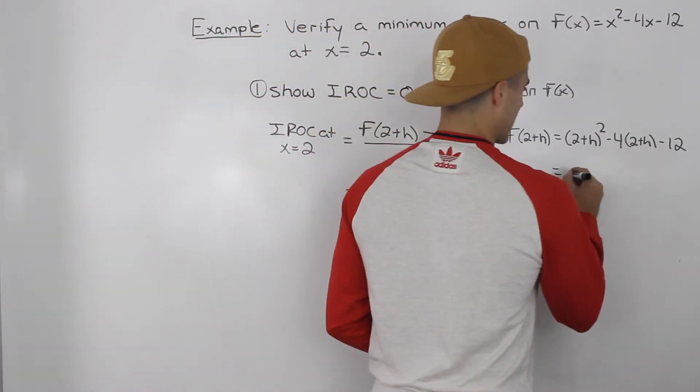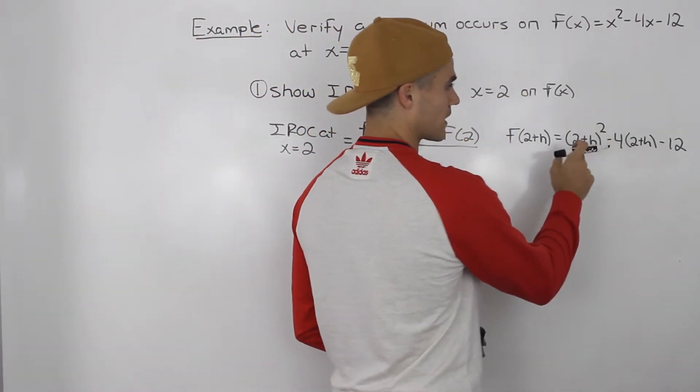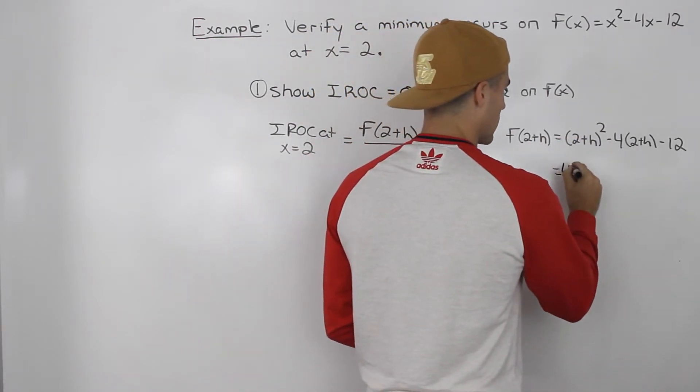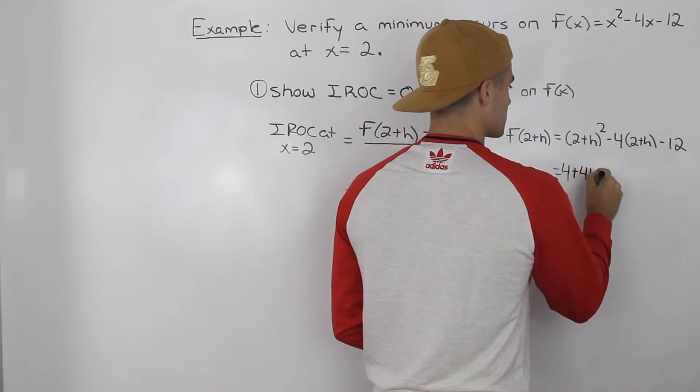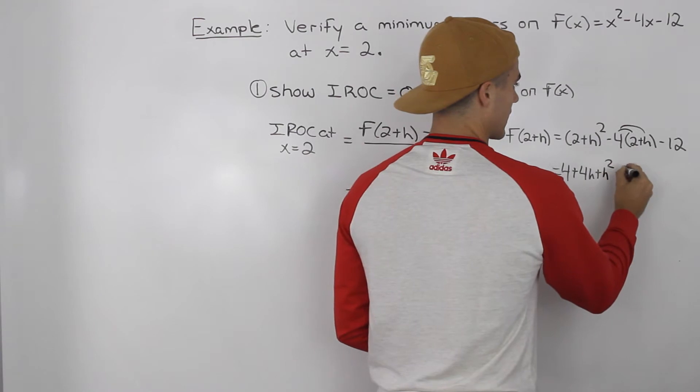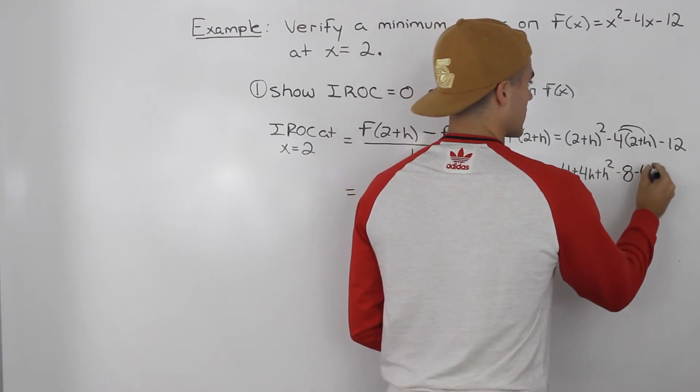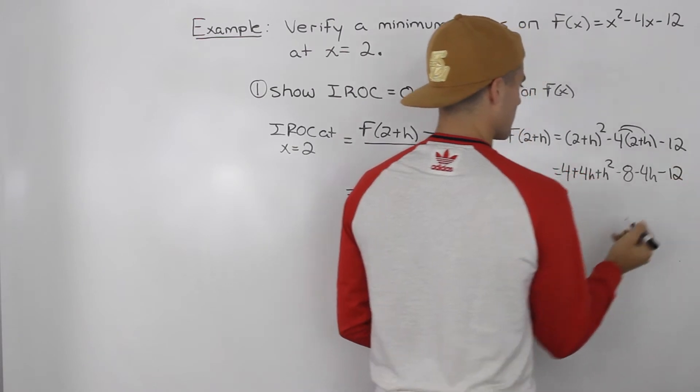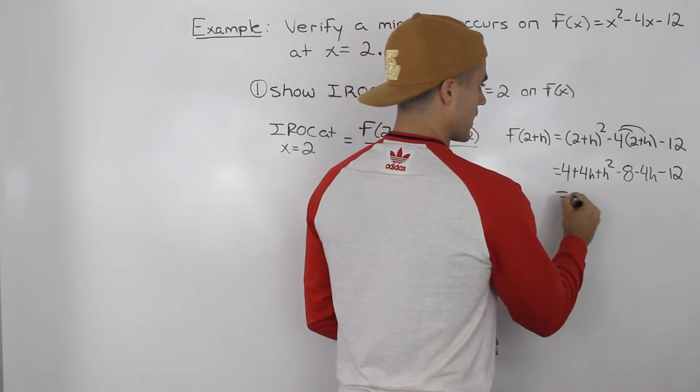When you expand everything, (2+h)² when you FOIL that, 2+h times 2+h, you would end up getting 4 + 4h + h². Then distributing this negative 4 in the bracket, you would get -8 - 4h. This would be minus 12.